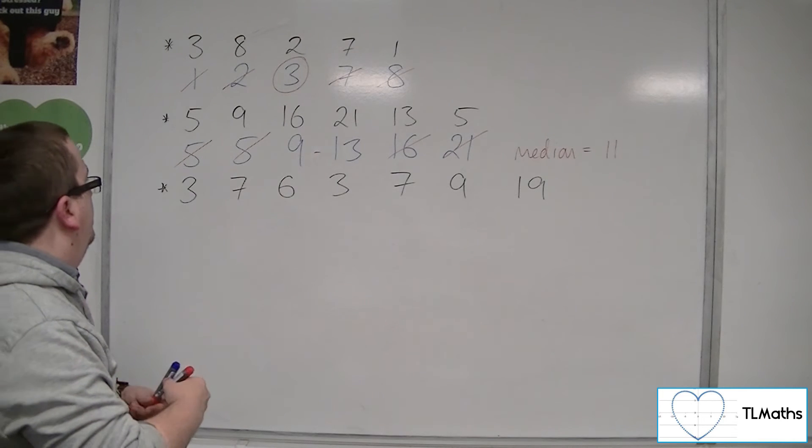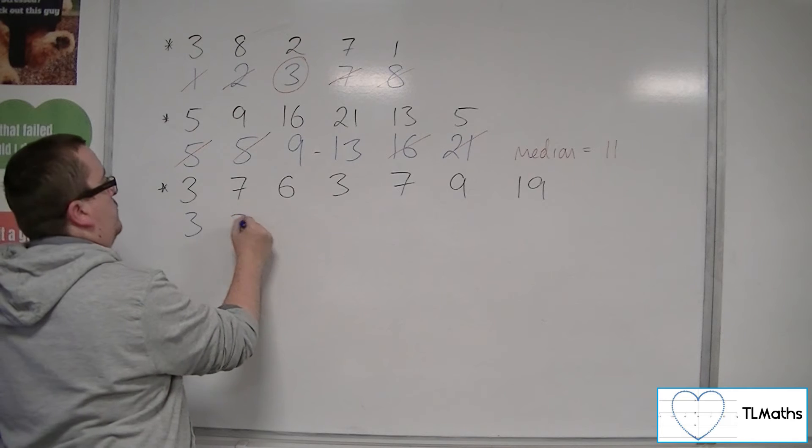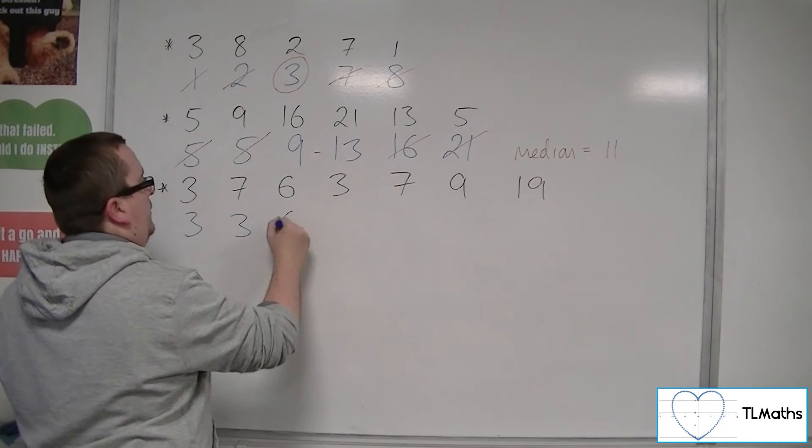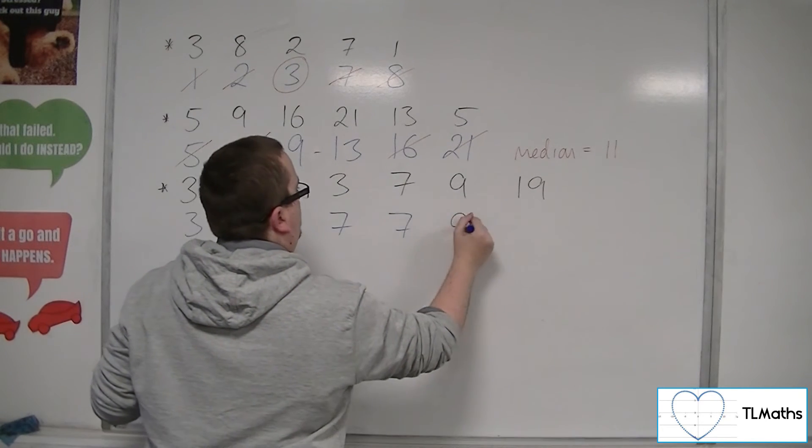So for the last set, putting them in order first, we've got 3, then 3. We've got the 6. We've got two 7s. We've got the 9 and the 19.